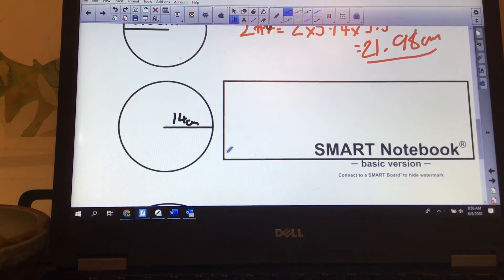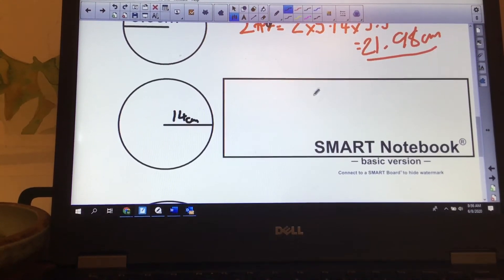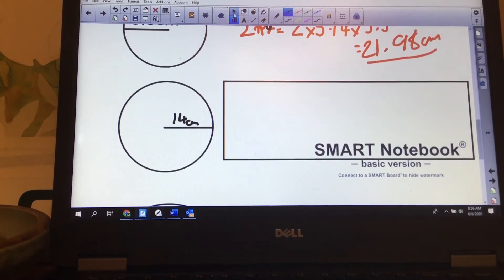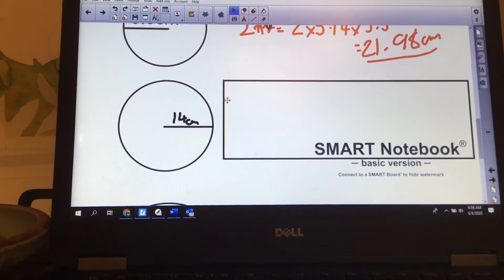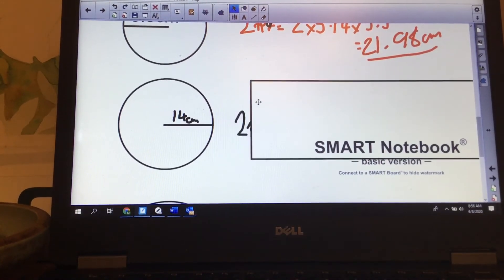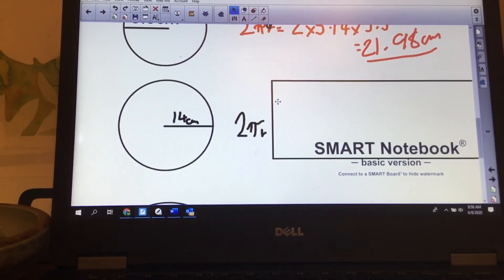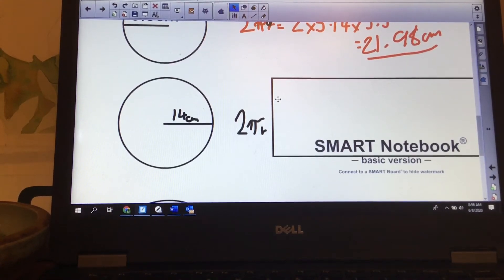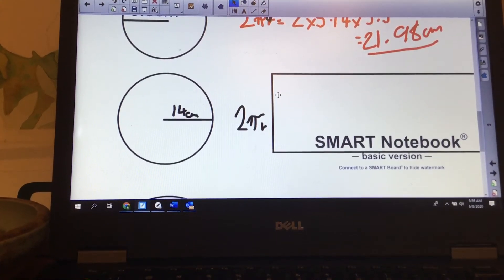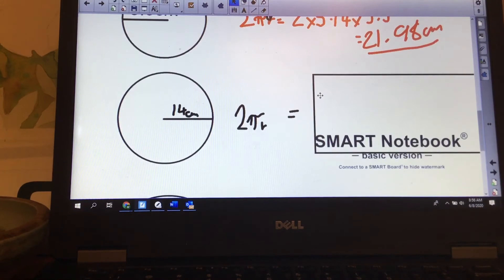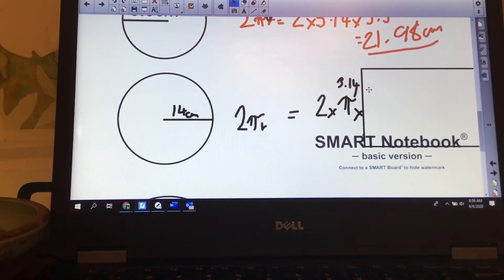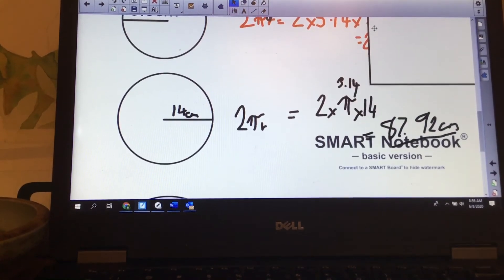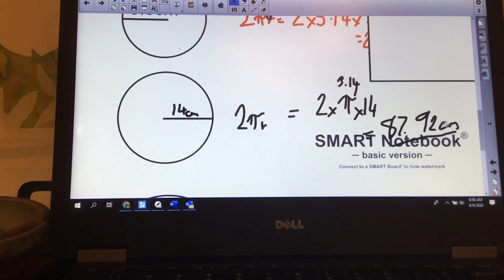Here is one for you to try. My radius is 14. Pause the video and see if you can calculate it. Let's take it up. The formula we would use is 2 times pi times r. I always write my formula out, it really helps me. So 2 times 3.14 times 14 gives me 87.92 centimeters.